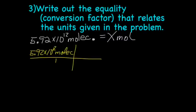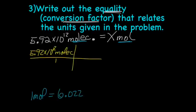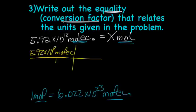All right, the next thing we do is write out the equality, or conversion factor, that relates the units given in the problem. And in this problem, we have molecules and moles. And for today, you only have one choice, but of course, we'll be adding on more as we progress through the unit. So we have the equality, 1 mole equals 6.022 times 10 to the 23rd molecules. And we've got moles and molecules here, and molecules and moles here. So, that's the equality we're going to use for this particular problem.